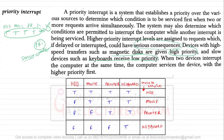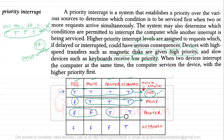When two devices interrupt the computer at the same time, the computer services the device with the higher priority first. As shown in the figure, if hard disk, mouse, printer, and keyboard all generate interrupts simultaneously, the hard disk is serviced first. If the hard disk has no interrupt, the mouse is serviced next, then the printer, and the keyboard has the lowest priority of all.